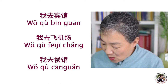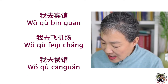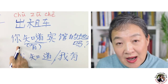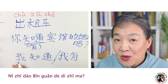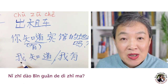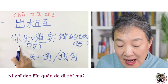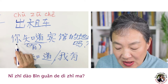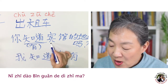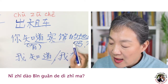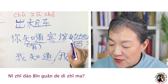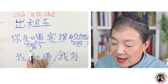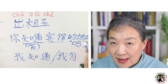Or 我去餐馆 — restaurant. Then the taxi driver may ask if you know the address. In Chinese: 你知道宾馆的地址吗? 你 means you, 知道 means know, 的 is a possessive particle, 地址 means address. In Chinese grammar, 地址 comes at the end.